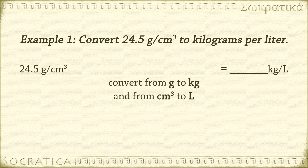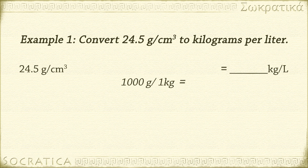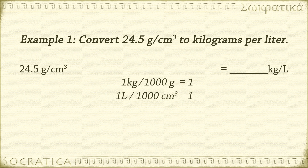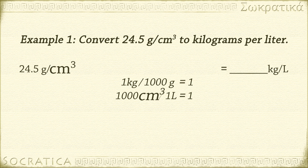There are 1,000 grams in 1 kilogram, so you could write 1,000 grams over 1 kilogram — that's a fraction equal to 1. You could also write 1 kilogram over 1,000 grams, which is also a fraction equal to 1. And there are 1,000 centimeters cubed in 1 liter. Again, you can write this as a fraction equal to 1: 1,000 centimeters cubed over 1 liter equals 1, and 1 liter over 1,000 centimeters cubed also equals 1. Here's where we have to be really careful.